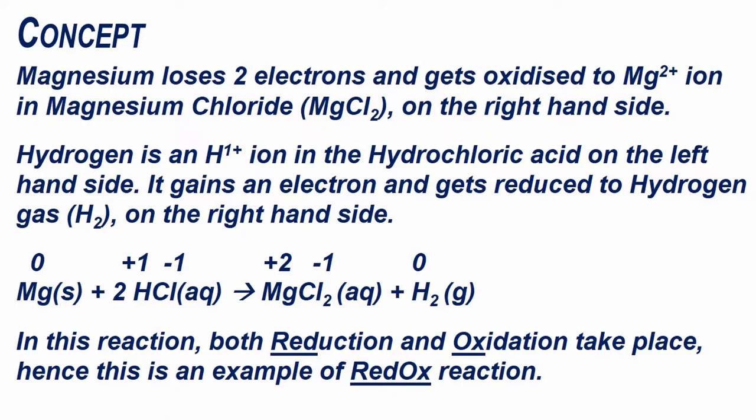Hydrogen is an H+ ion in the hydrochloric acid on the left-hand side. It gains an electron and gets reduced to hydrogen gas H2 on the right-hand side.